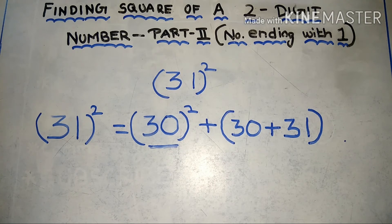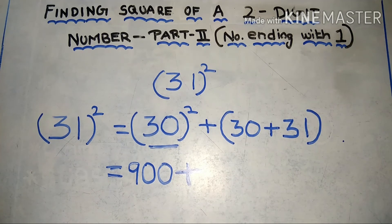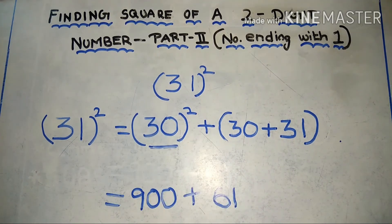Which is equal to 30 square, 900, plus 30 plus 31, 61. 900 plus 61 which is equal to 961.